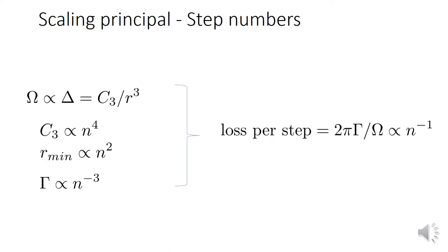Looking for an optimum principal number, I present the scaling of step numbers as a function of n. Stronger interaction results in faster operation, and the interaction constant scales as n to the power of 4. The minimum distance of atoms scales as n-squared as defined by the Lehrer radius, and the lifetime of the Rydberg level scales as n-cubed. Therefore, the step number scales linearly with n.